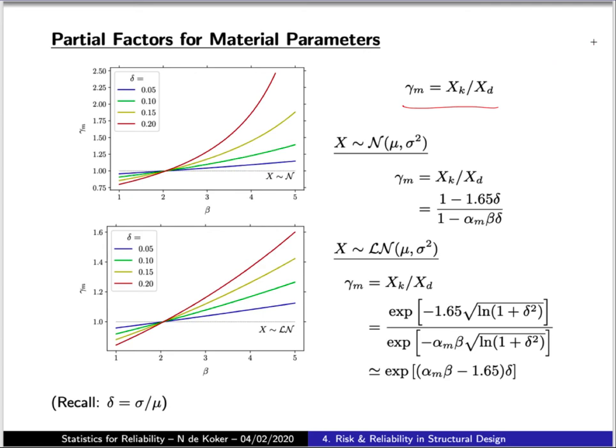Similarly, the characteristic value will have some associated confidence bound on it. In a South African context, it is generally 95%. In the Eurocodes, it is generally 98%. You'll recall that the standard normal value corresponding to a 95% interval bound is 1.65.